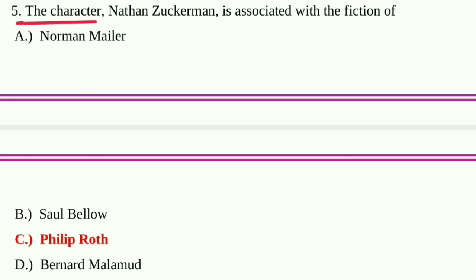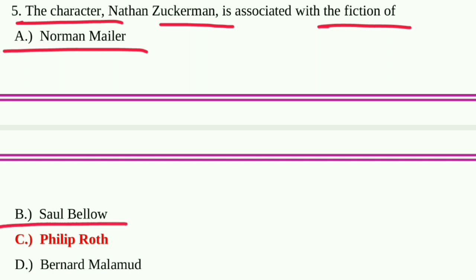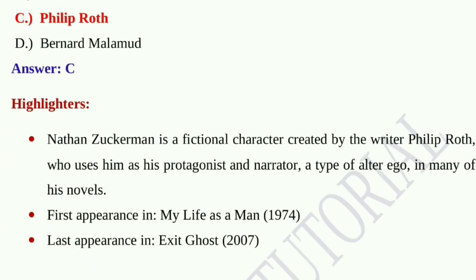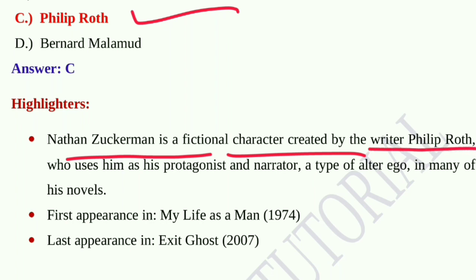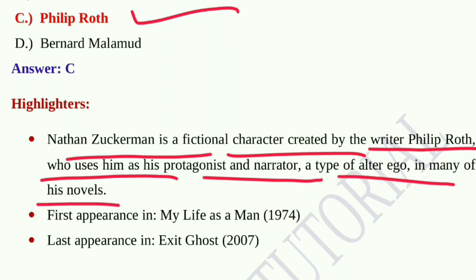Question number five: The character Nathan Zuckerman is associated with the fiction of option A, Norman Mailer; option B, Saul Bellow; option C, Philip Roth; option D, Bernard Malamud. Option C, Philip Roth, is the correct answer. Nathan Zuckerman is a fictional writer created by Philip Roth, used as his protagonist and narrator — a type of alter ego — in many of his novels. His first appearance was in My Life as a Man in 1974, and last appearance in Exit the Ghost published in 2007.